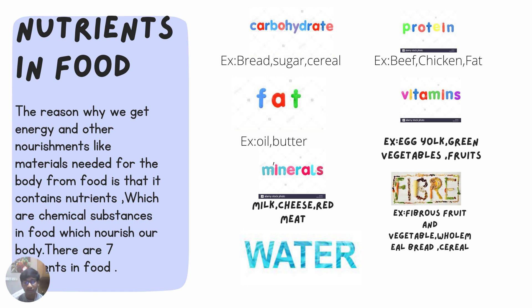There are seven main nutrients in our food: carbohydrates, fats, minerals, water, protein, vitamins, and roughage or dietary fiber. Carbohydrates can be found in foods like bread, sugar, cereal, etc.